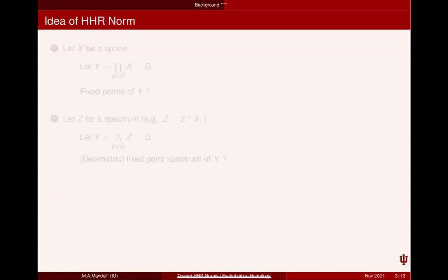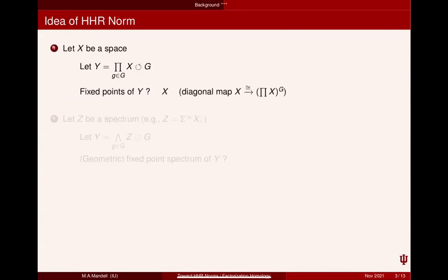Let me talk about what the norm is trying to capture — the idea of the HHR norm. It's something about spectra, but let me start with spaces. Let X be a space, and then you can make another space by taking a Cartesian product of copies of X indexed on the elements of G. This will have an action of G where you just permute the coordinates. The fixed points of this space are just X again, given by the diagonal map — the diagonal map gives an isomorphism between X and the fixed points.